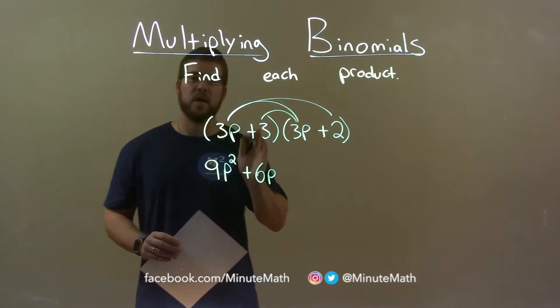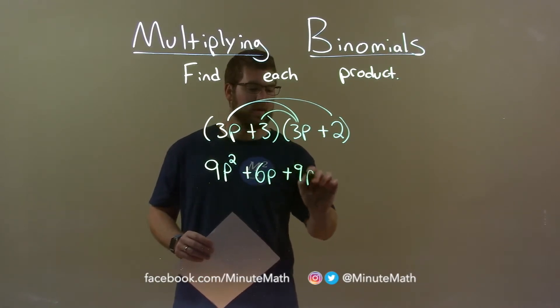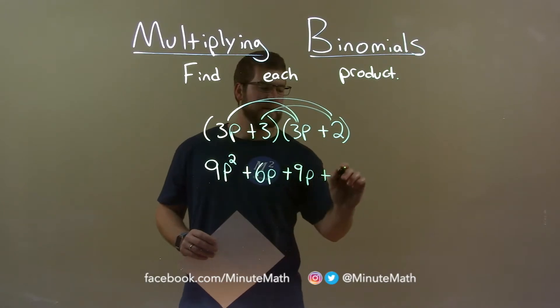3 times 3p is 9p, and 3 times 2, for the last part, is 6.